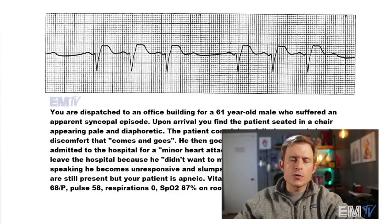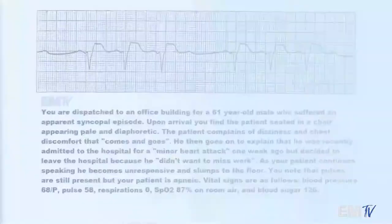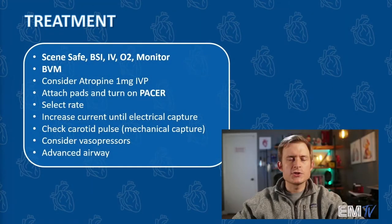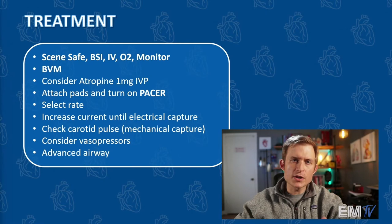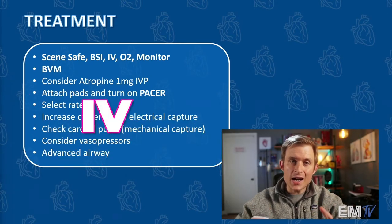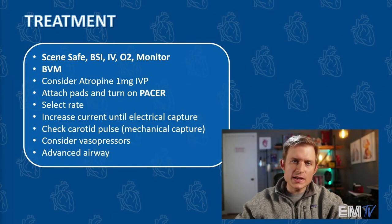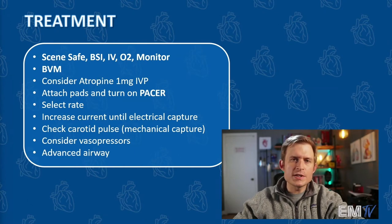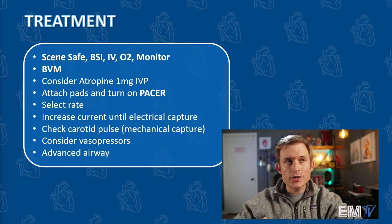Let's now go over the treatment for this rhythm. Just like with all Static Cardiology cards, you should begin your treatment by reciting the mantra: scene safe, BSI, IV O2 monitor. The next thing I want to do is ventilate this patient with a BVM, because he is apneic. Because this is technically a bradycardic rhythm, I'll consider atropine 1mg IV push.